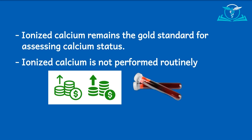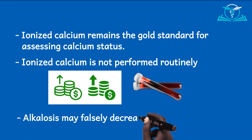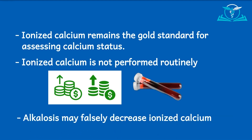It is also important to note that the affinity of calcium for albumin is increased in the presence of alkalosis. Thus, any alkalotic state may cause an acute decrease in ionized calcium. So before you interpret this report, you should note that a patient in a state of alkalosis may have a falsely low calcium because calcium has a high affinity for albumin during alkalosis.